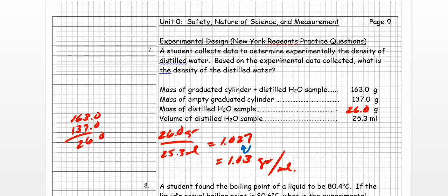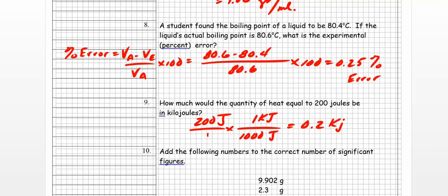Alright. Let's go to number eight. Number eight says this. It says, a student found the boiling point of a liquid to be 80.4 degrees Celsius. If the liquid's actual boiling point is 80.6 degrees Celsius, what is the experimental or percent error? Alright. Well, we have to remember what the formula is for percent error. Percent error is equal to the value accepted minus the value experimental divided by the value accepted. Now, they tell me that the actual value is 80.6, right? So that's the one that goes here and goes down here as well. But it says the experimental value, the one that was determined, is 80.4. So when I take that difference, I get this number. I get actually 0.0025%, but when I multiply it by 100, I get a very small percent error, only 0.25% error, and that'll do it for number eight.